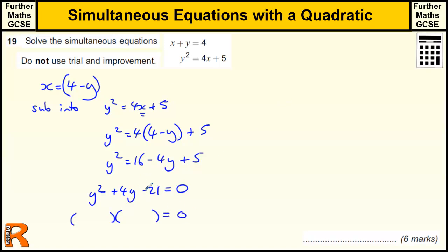21 could either be 1 times 21, or 3 times 7, and one of them has to be negative. Because the answer here is positive, the bigger of the two has to be positive, so the smaller one has to be negative. And clearly minus 3 plus 7, which is how we get the middle term, gives us 4.